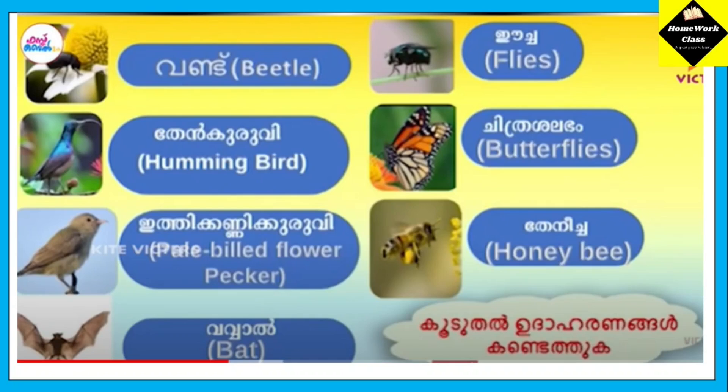This is a hummingbird. The tail is a hummingbird. This one is pale bill flower pecker. That's why it's a pollinating agent. Butterflies and honeybee are also pollinating agents.